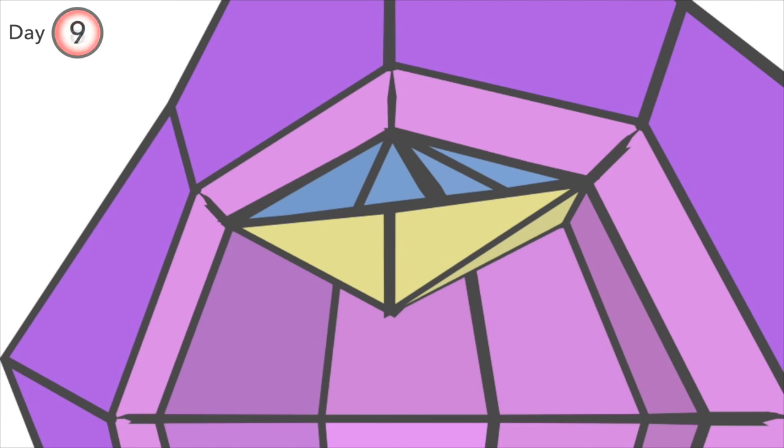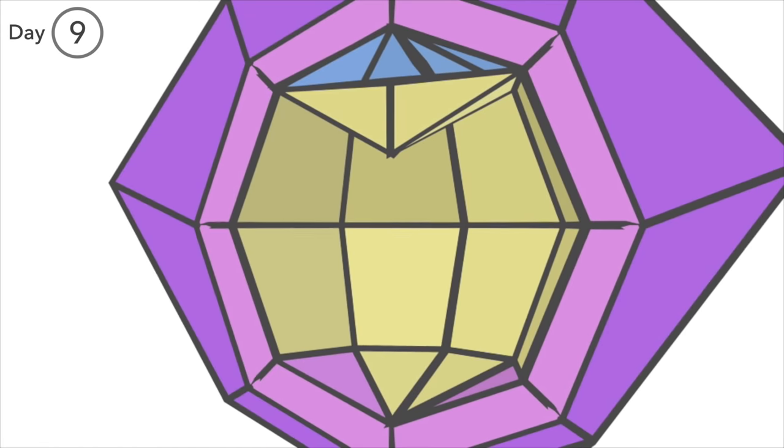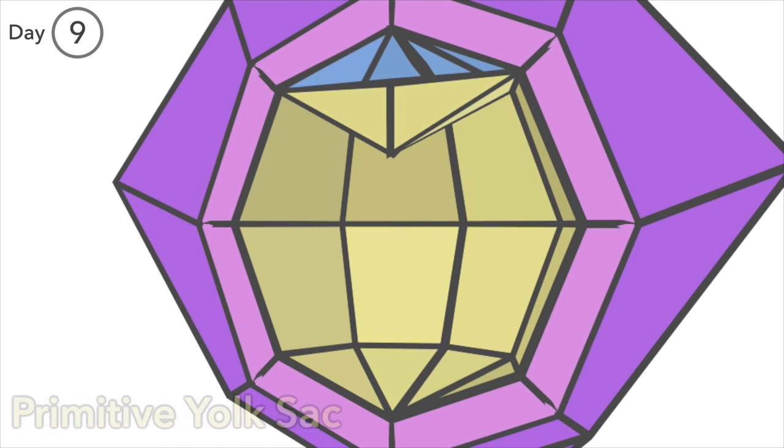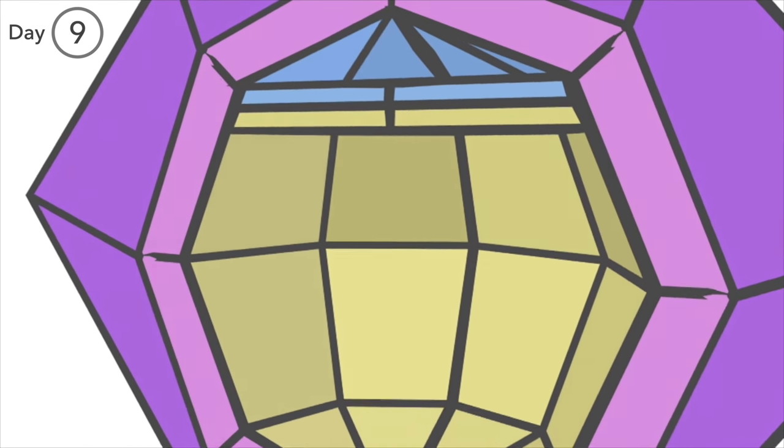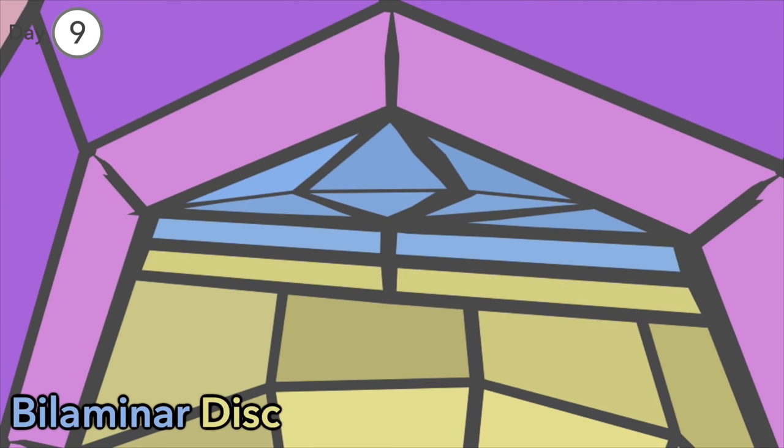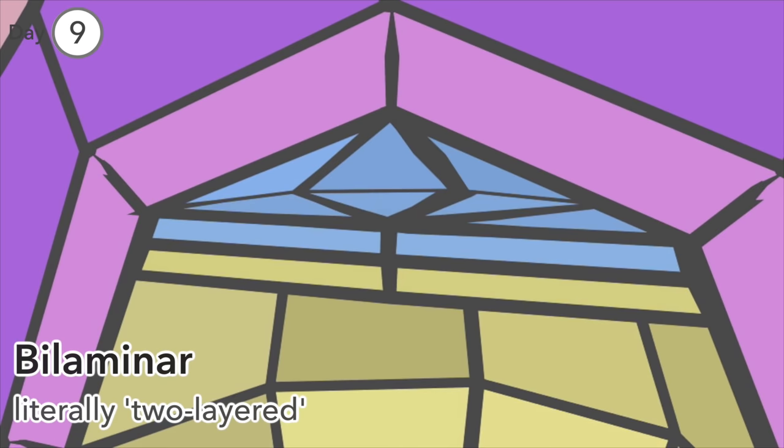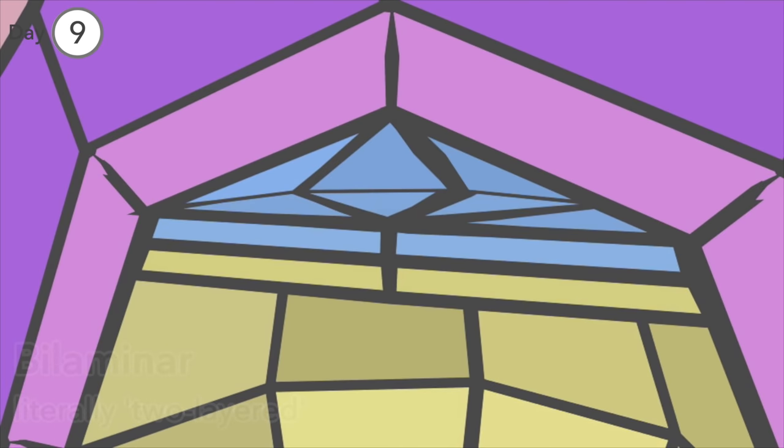Day 9. Meanwhile, cells of the hypoblast have migrated to replace the blastocyst cavity with the primitive yolk sac. Hypoblast and epiblast together are here known as the bilaminar disc. Bilaminar means two-layered.